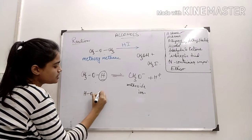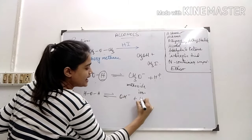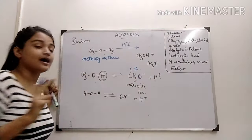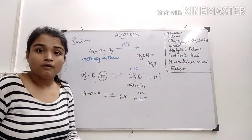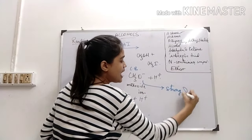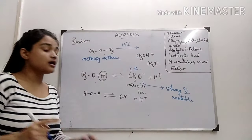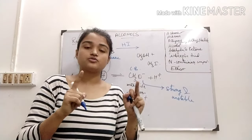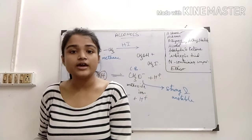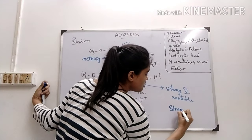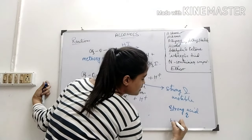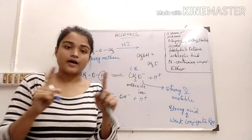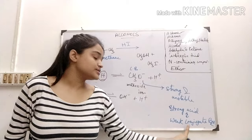Why? Because in the case of water, it dissociates into OH⁻ and H⁺. Now, these are the conjugate bases. If we compare by conjugate base, in the case of the methoxide ion, the conjugate base is strong and unstable. When a conjugate base is strong and unstable, the corresponding acid will be a weak acid. So, a weak acid forms a strong conjugate base, and a strong acid forms a weak conjugate base.